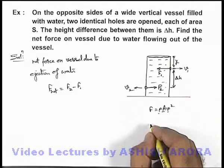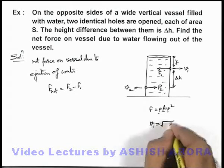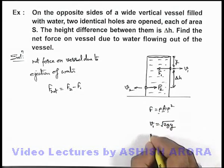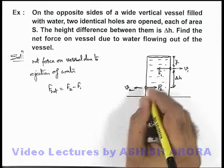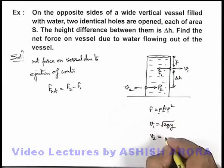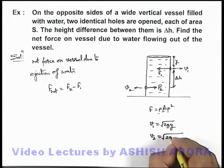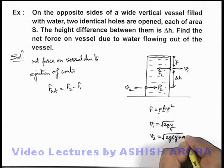In this situation here, efflux velocity v1 can be written as root 2gy. And efflux velocity v2, which is at depth y plus delta h, can be written as root 2g times y plus delta h.